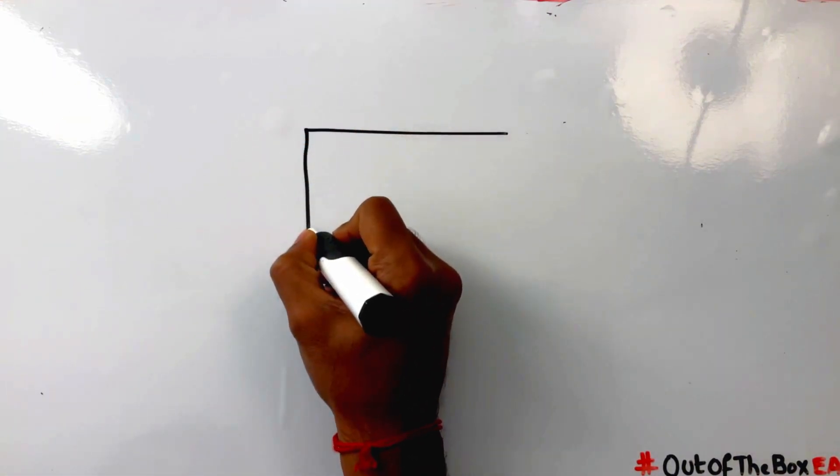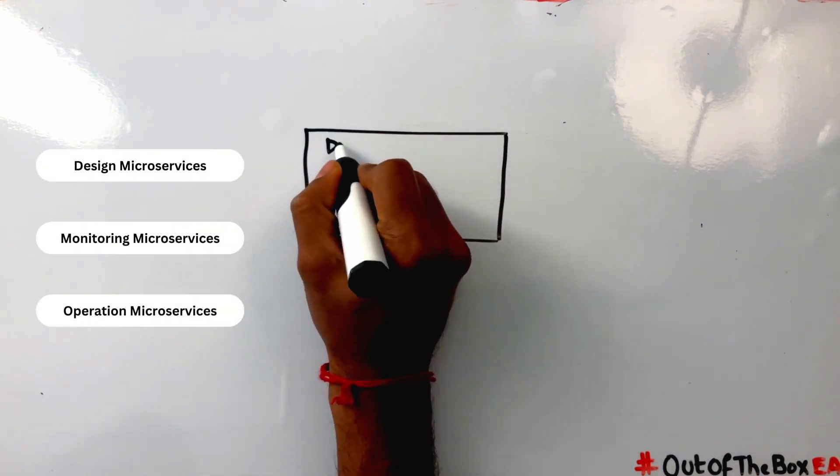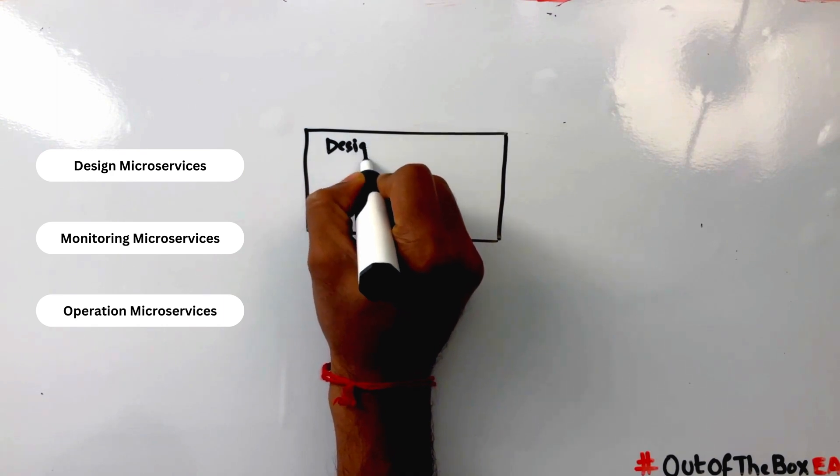SAP offers three different types of microservices called Design, Monitoring and Operation microservices to work with SAP CPI.